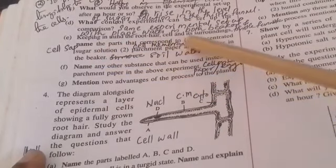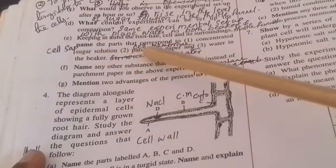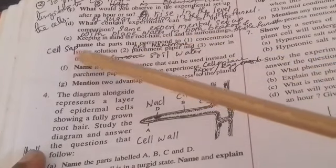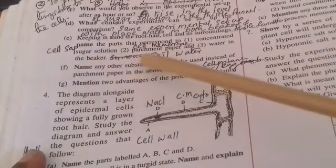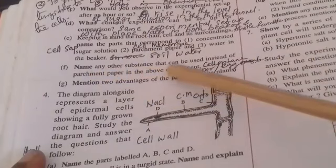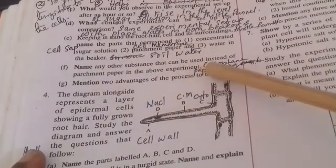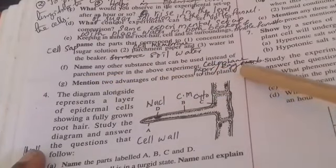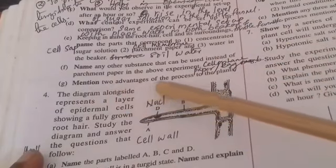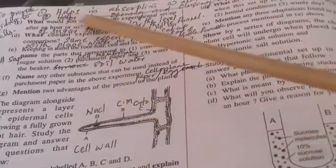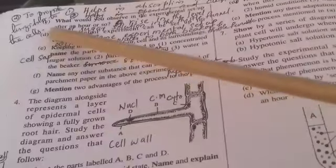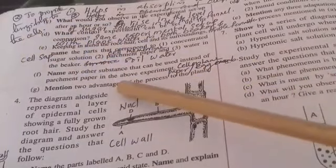In relation to the root hair cell: the concentrated sugar solution corresponds to the cell sap of the root hair; the parchment paper corresponds to the cell membrane; water in the beaker corresponds to soil water. Other substances that can be used instead of parchment paper include cellophane paper, egg membrane, or animal bladder. Two advantages of osmosis to the plant: it helps in absorption of water from the soil by root hairs, and it provides turgidity to the cells.